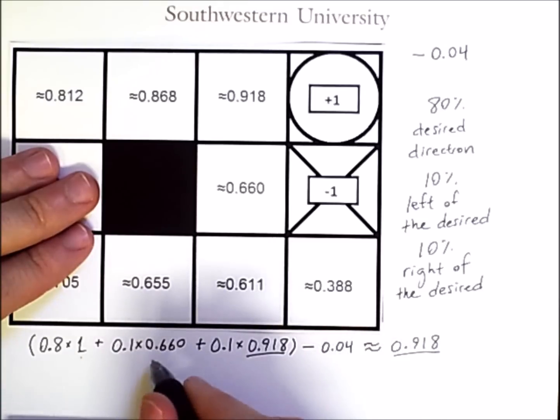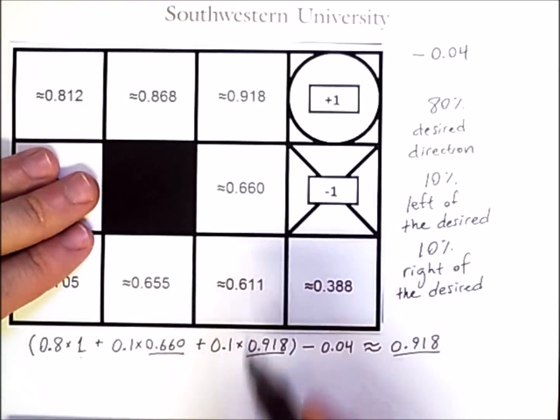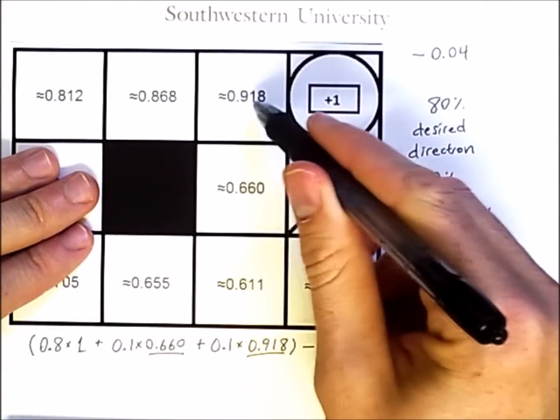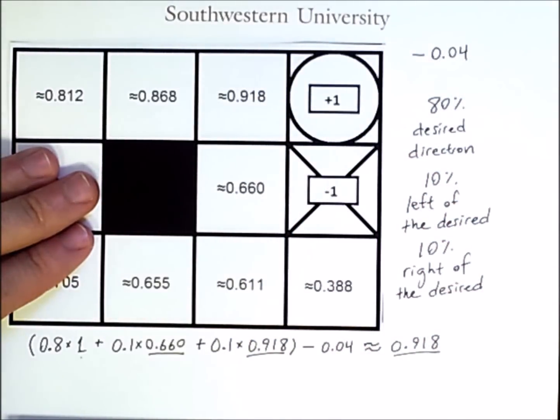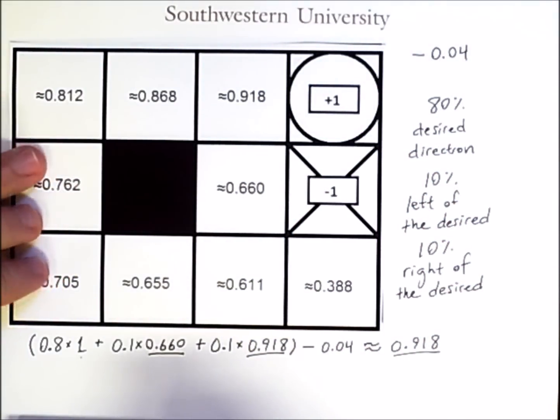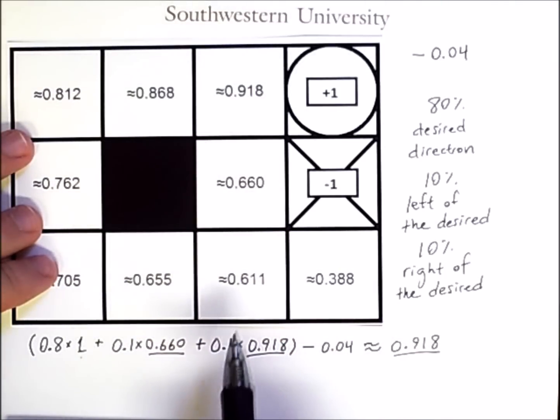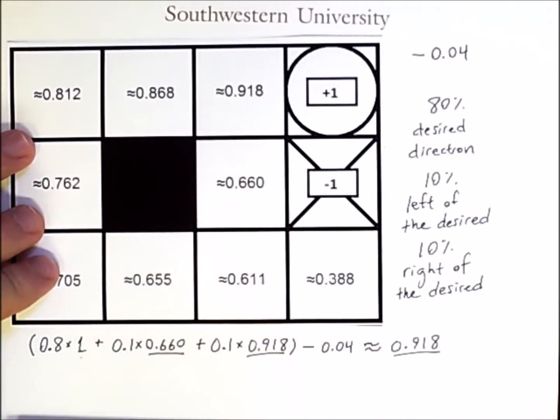We also had to know this value, the value in this state, which we wouldn't necessarily know without also already knowing this state. So given these values, we can confirm that they all make sense.